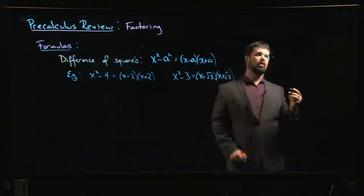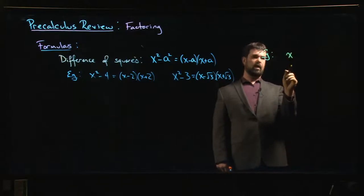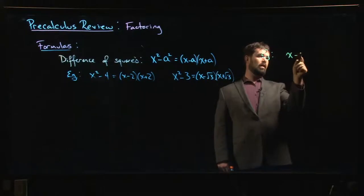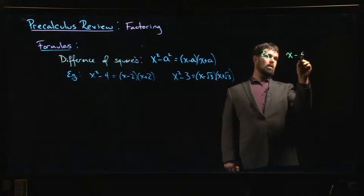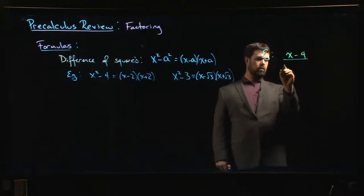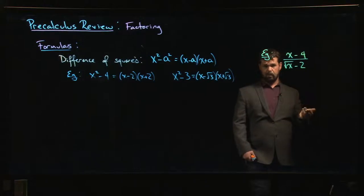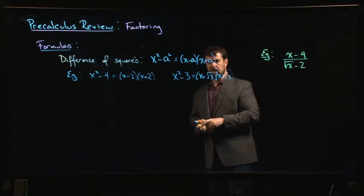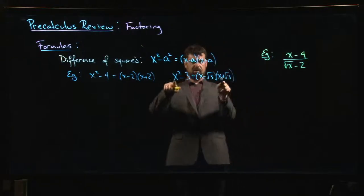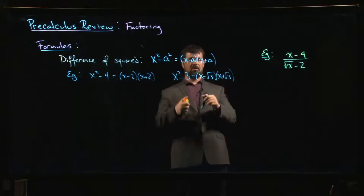So you might do it in something like, say you have the following: x minus 4 over root x minus 2, and you don't like having that root x in the bottom, you want to get rid of it. So how do you get rid of that root x? Well, one of the things you can do is say hey, I just saw this example here.